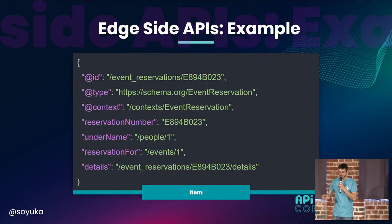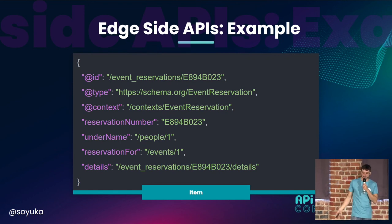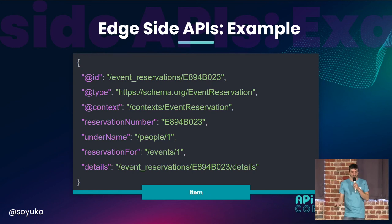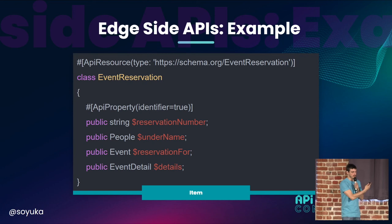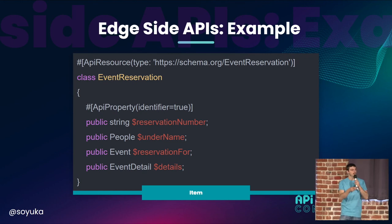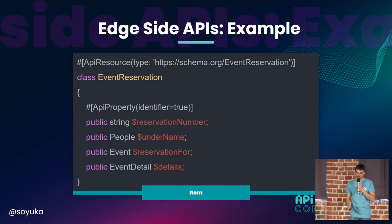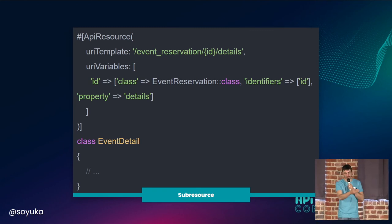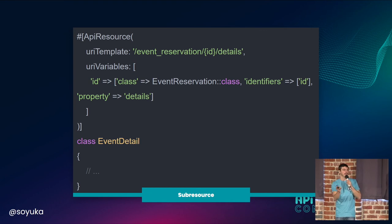If I take now an item — so this is the event reservation — you can see that inside the details, let's say we have a bunch of details we don't really need in every call, so we put this in a sub-resource. The resource definition on the item is the event reservation class with identifier reservation number. We are working to pre-calculate the URI template and URI variables — you don't have to do this yourself if you don't need to. For the event detail, we can say this is the URI template, and the variables are mapping ID to the event reservation class with identifiers and the property it belongs to.